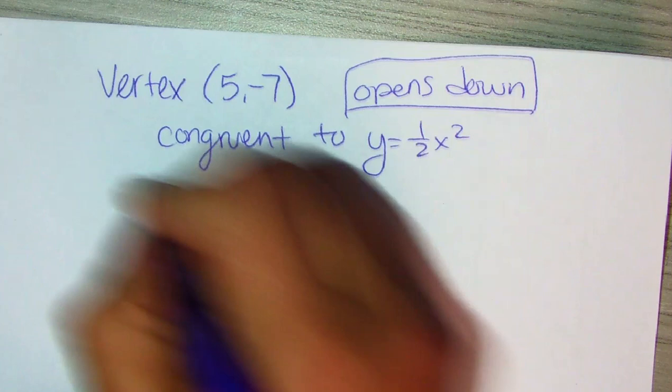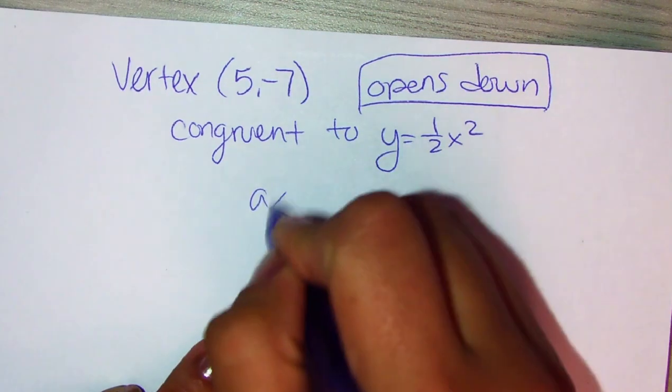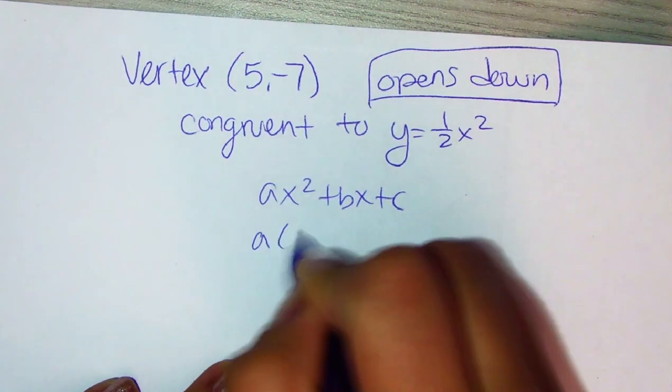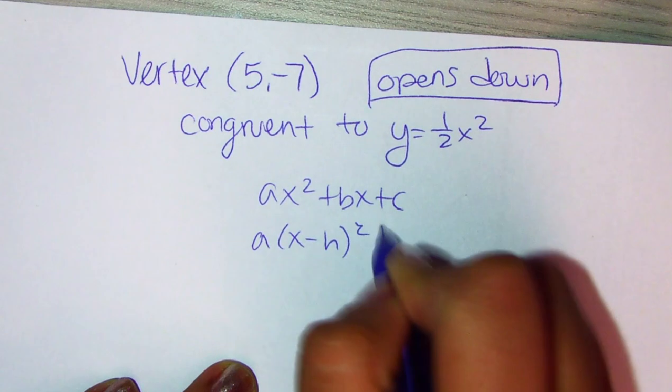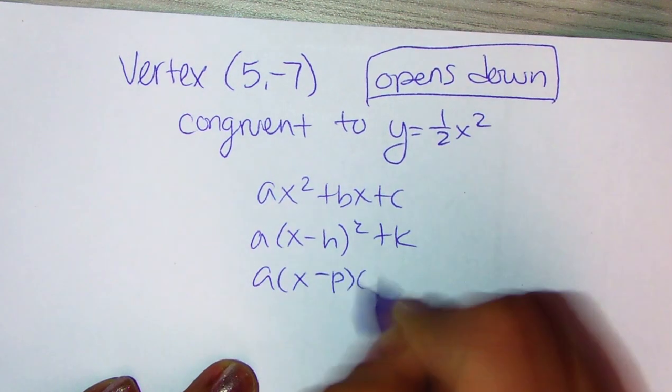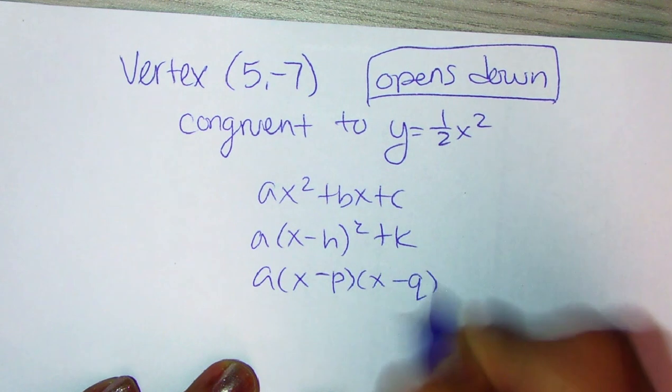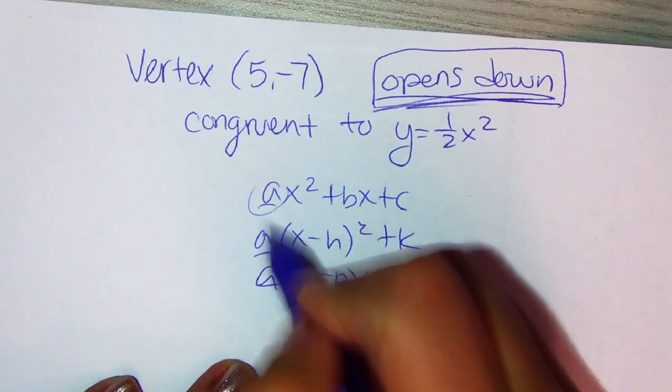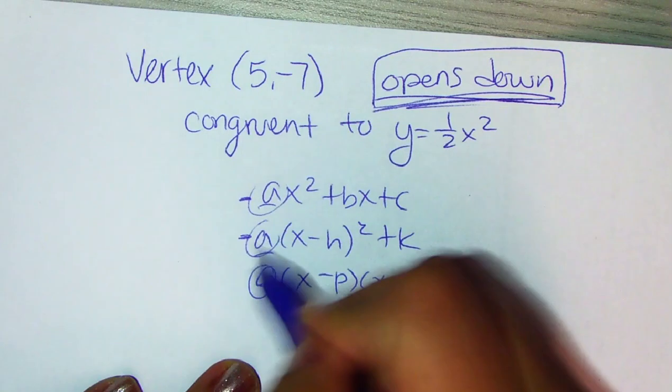We talked about an equation, whether you have standard or vertex form or intercept form. All of these have the letter A in front. And if it opens down, this letter A has to be negative.